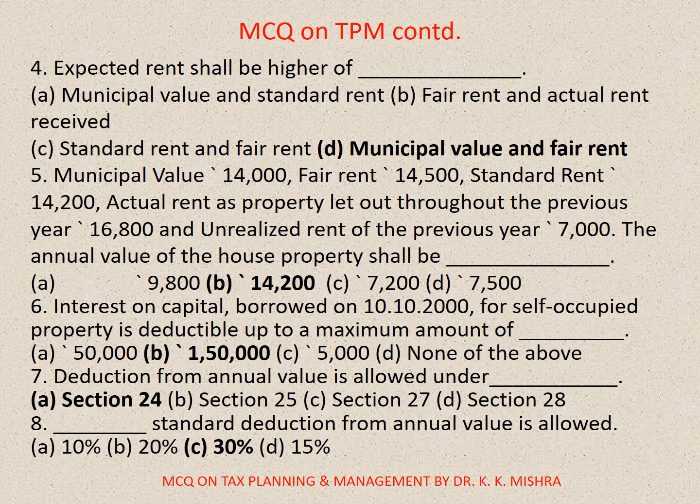Question number 5: Municipal value: 14,000; Fair rent: 14,500; Standard rent: 14,200; Actual rent (let out throughout the previous year): 16,800; Unrealized rent of the previous year: 7,000. The annual value of the house property shall be — correct option is B: 14,200.